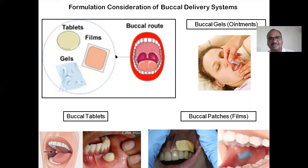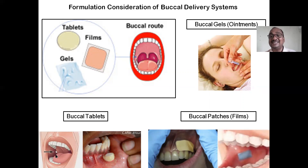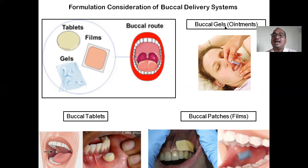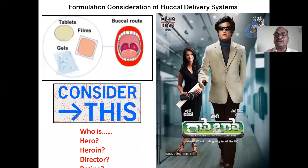The last point: formulation considerations for buccal drug delivery system. Buccal drug delivery refers only to the buccal cavity. You can use tablets, films, or gels. Buccal tablets adhere to the inside of the cheek just like chocolate, or can be fixed to the gum. Buccal patches stick onto the buccal cavity or onto the teeth. Buccal gels, like ointments, wherever there is infection, adhere to the mucous membrane. These are all buccal formulations.